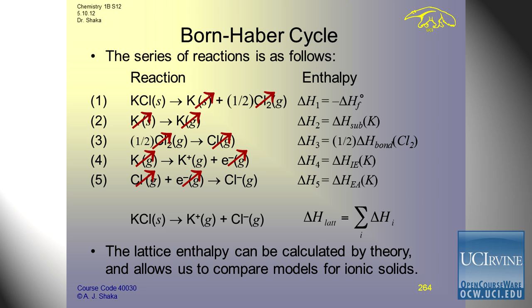Then we have to take potassium in the standard state and turn it into potassium vapor. This should be the delta H of sublimation — not vaporization — because we start with potassium solid at the standard state. Then we have to make a single chlorine atom out of molecular chlorine: take half a mole of Cl₂ and make a whole mole of Cl dot, chlorine atoms — far, far more reactive than molecular chlorine.